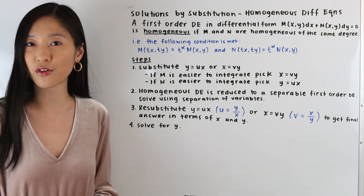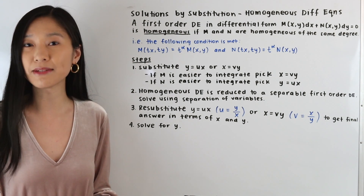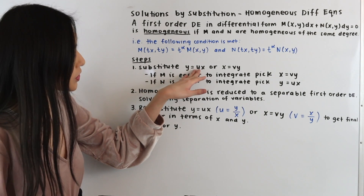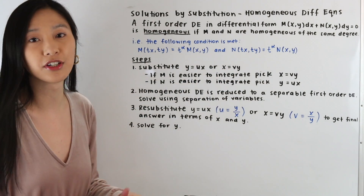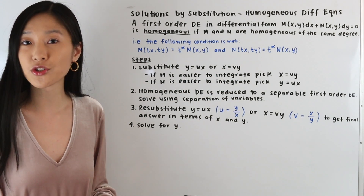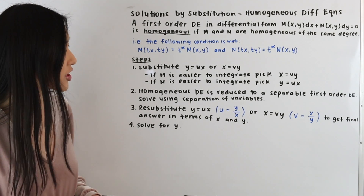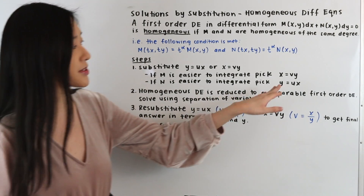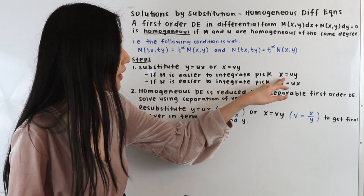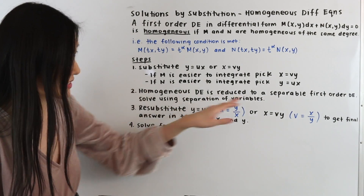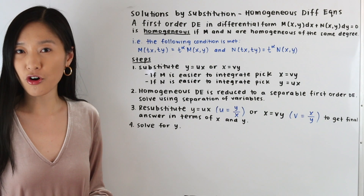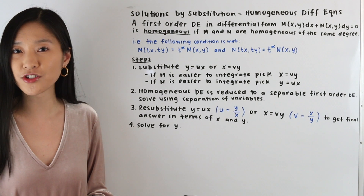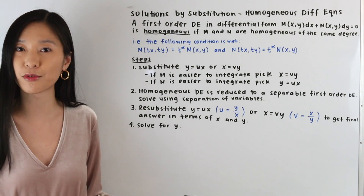Now let's go over the steps we need to perform when solving a homogeneous differential equation using the method of substitution. The first step is to substitute y equals ux or x equals vy into our differential equation. Our choice of substitution depends on which function M or N is easier to integrate. If M is easier to integrate, we pick x equals vy; if N is easier to integrate, we pick y equals ux. Performing the substitution reduces our homogeneous equation into a separable first-order differential equation we can solve using separation of variables.